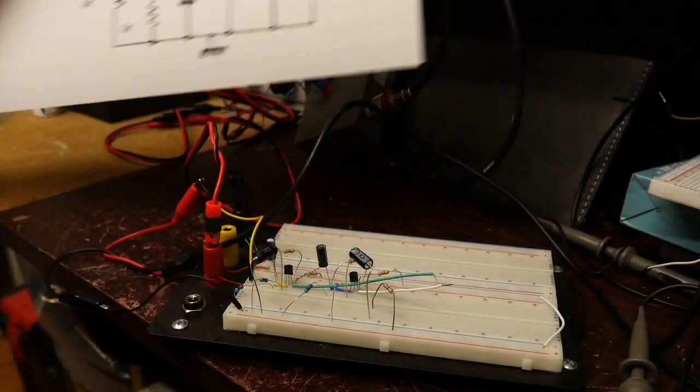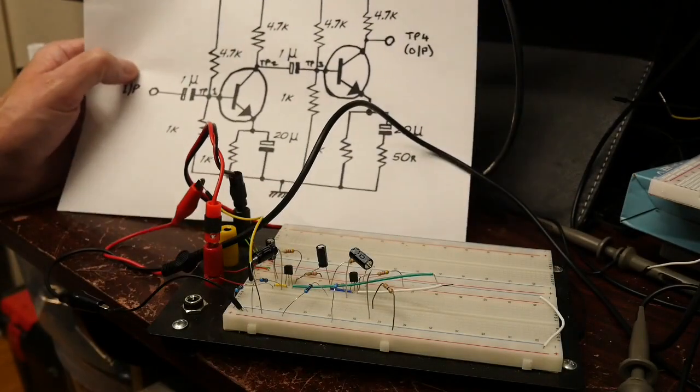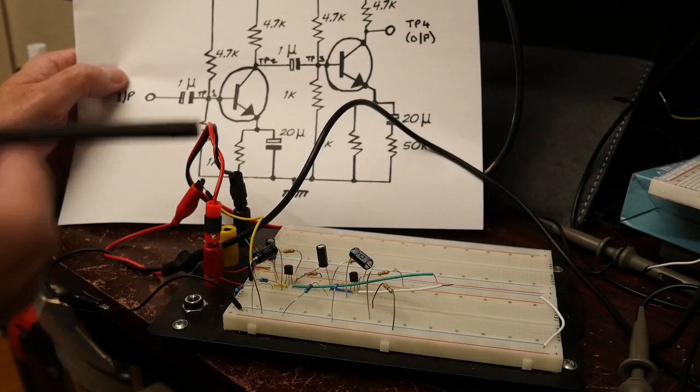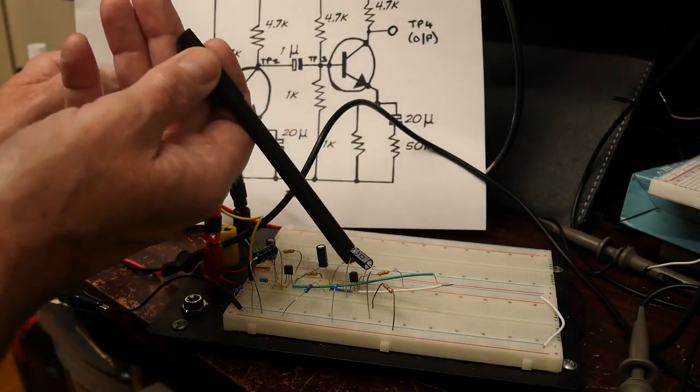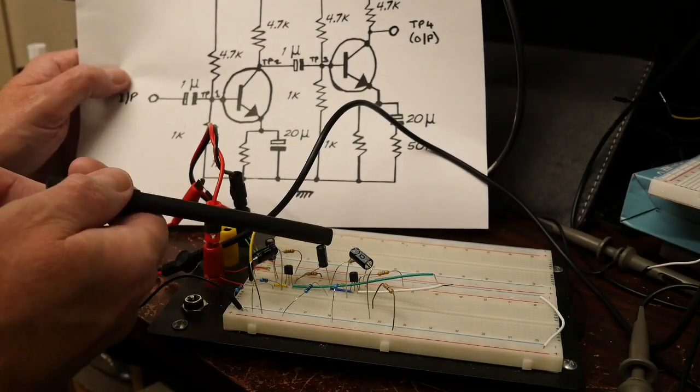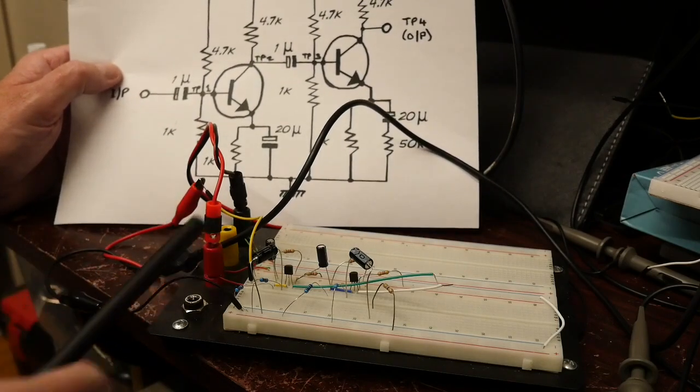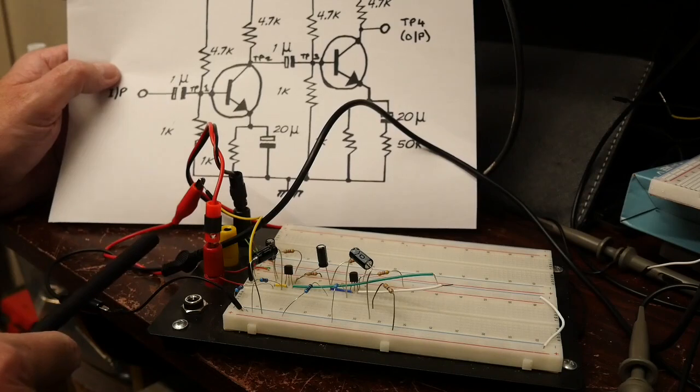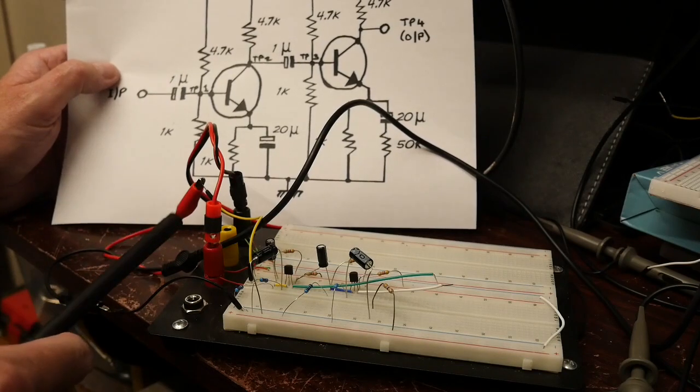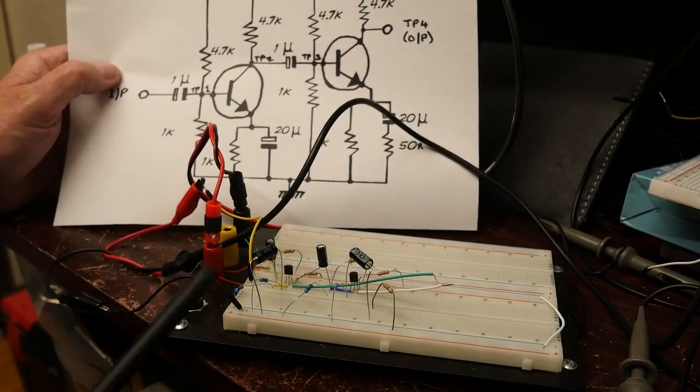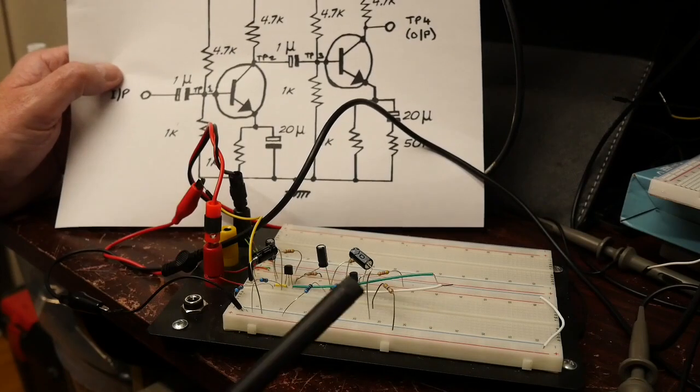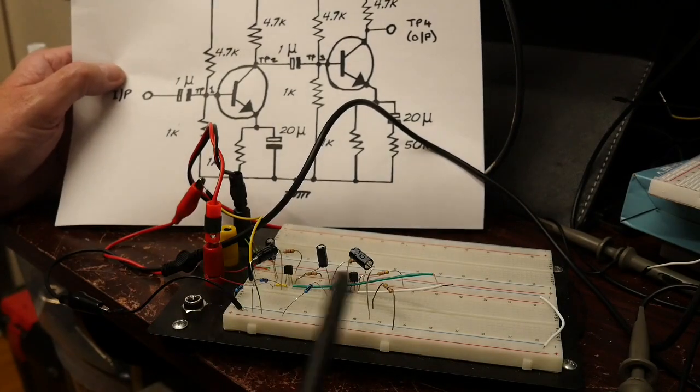So here is the actual circuit on the breadboard. Transistor one is there, transistor two there. These are the decoupling caps here, connected through this yellow lead, and this black lead is the input signal coming from the signal generator, which is a part of the Hantec 2D72.